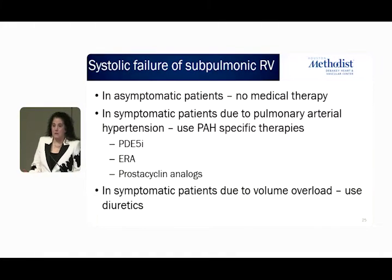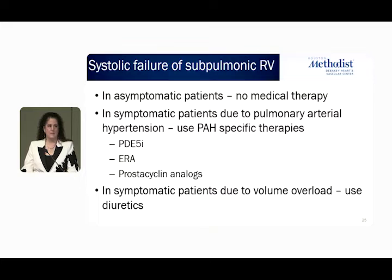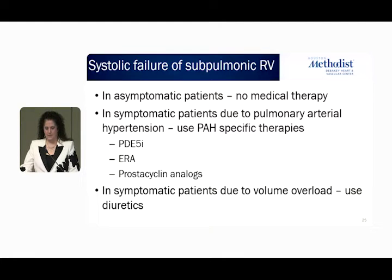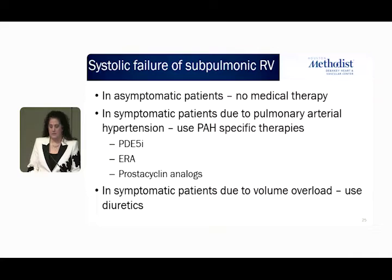What do we recommend in patients with sub-pulmonary RV failure? In asymptomatic patients, unless they have pulmonary valve regurgitation as in Tetralogy of Fallot, there's really no medical therapy we recommend. If you have a low right-sided EF and you're asymptomatic, as much as we want to do something, we don't have data to support it. If symptomatic with pulmonary arterial hypertension, we need to treat their PAH. PDE-5 inhibitors and ERAs have the most data in congenital heart disease, with growing data for prostacyclin analogs. Diuretics can also be used in symptomatic patients.